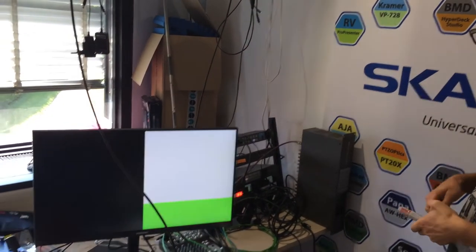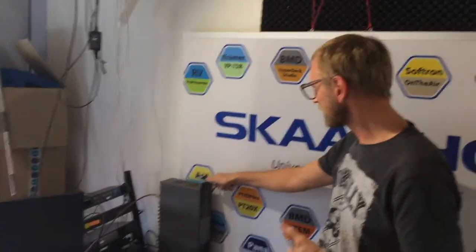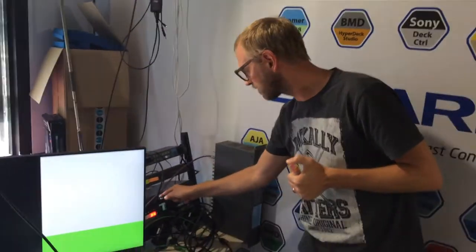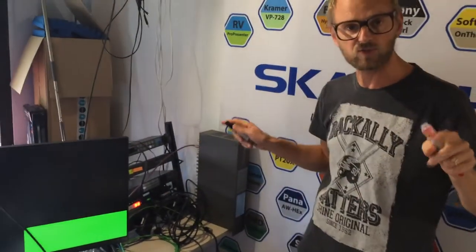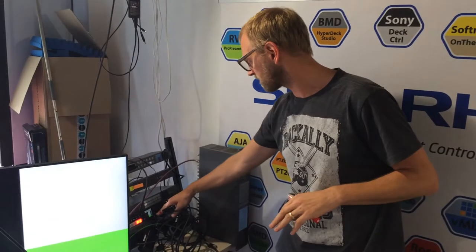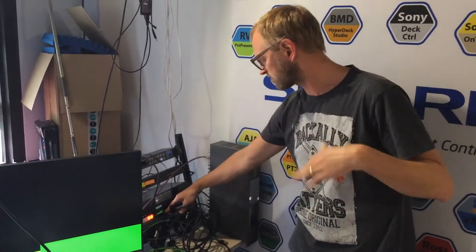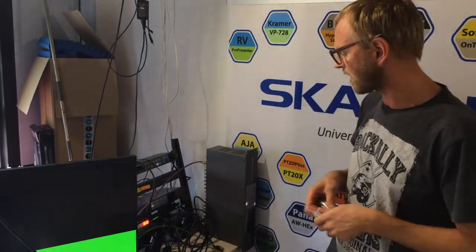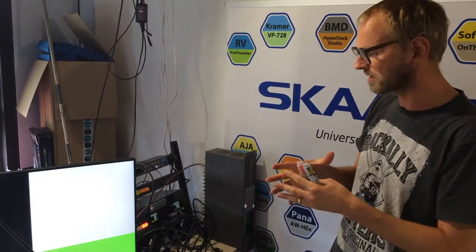A little about what we have here: we have an ATEM 2ME Production Studio 4K and a Production Studio 4K - those are the two ATEM switchers 1 and 2. Then I have an ATEM Television Studio HTVS, the new one from March, which is where the two signals come together.